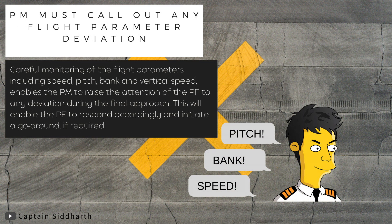Pilot monitoring must call out any flight parameter deviation. Careful monitoring of the flight parameters including speed, pitch, bank, and vertical speed enables the pilot monitoring to raise the attention of the pilot flying to any deviation during the final approach. This will enable the pilot flying to respond accordingly and initiate a go-around, if required.